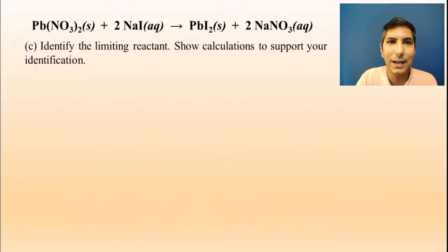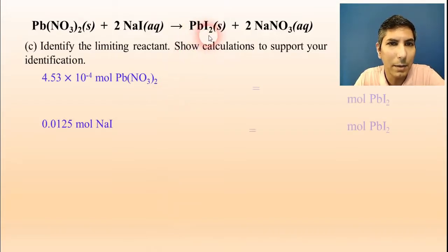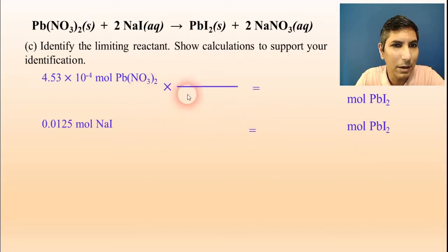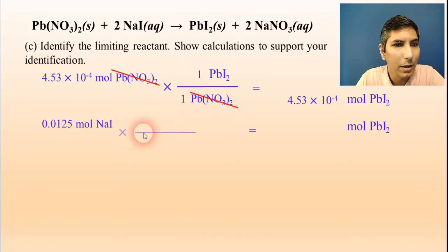Part C says identify the limiting reactant, and of course show calculations. So we're going to take those two mole values that we just calculated, and we're going to find out which one is used up first. Now we need to convert this to a product. So I'm just going to use lead(II) iodide. And so I'm going to write this down as moles of lead(II) iodide. And let's convert these and see which one gives us the smaller number. So in my first one, these are both in moles, so I can go straight to mole ratio. So lead(II) nitrate on the bottom and lead(II) iodide on top. And the coefficients tell me that this is a 1 to 1 mole ratio. So when I look at that, it's just the same number of moles of lead(II) iodide.